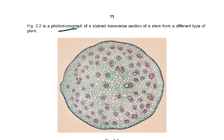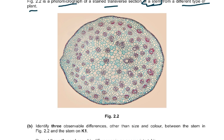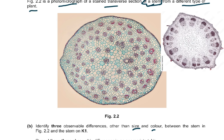Figure 2.2 is a photomicrograph of a stained transverse section of a stem from a different type of plant — it was actually a monocot stem, whereas K1 was a dicot stem. Of course you don't have to know this. Identify three observable differences — other than size and colour — between the stem in figure 2.2 and the stem on K1. I'm going to show you a slide for comparison — this is not the Cambridge slide but I can guess what it looked like.